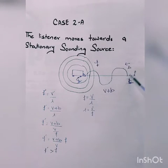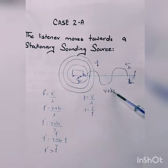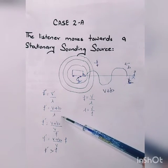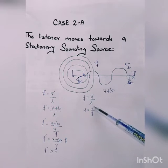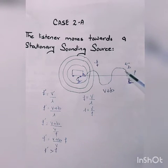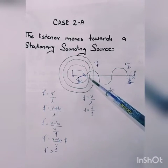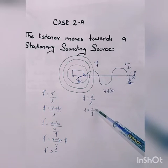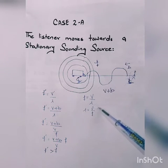The new speed V prime equals V plus B, where V is the speed of sound and B is the speed of the listener. So the new frequency is V plus B divided by lambda, where lambda remains the same — it is the wavelength of sound generated by the sounding source. Lambda equals V divided by F, which is the distance between source and listener per wave when both are at rest. We substitute this value of wavelength into the expression.